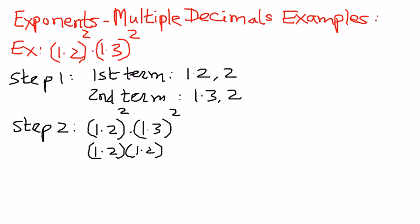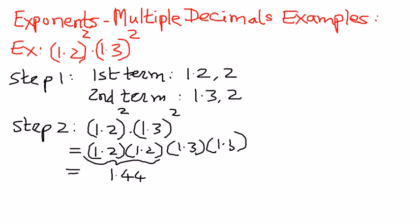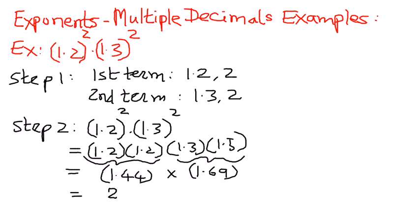And in the second term, we're going to repeat the base term 2 times: 1.3 times 1.3. Now we're going to simplify the math. We take two numbers at a time: 1.2 times 1.2 is 1.44, and 1.3 times 1.3 is 1.69. We then take these two numbers and multiply: 1.44 multiplied by 1.69. Therefore, the answer is equal to 2.4336.